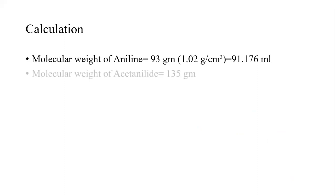We will see the calculation here also. We know that the molecular weight of aniline is 93 grams. Here we have taken 4 ml of aniline, so it is in grams, we need to convert it into ml. The density of aniline is 1.02 g/cm³. So 93 grams is equal to 91.176 ml of aniline.